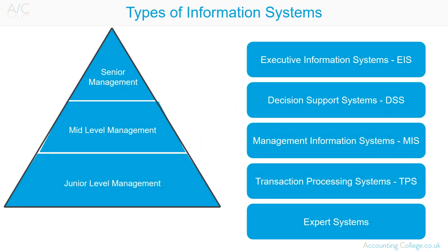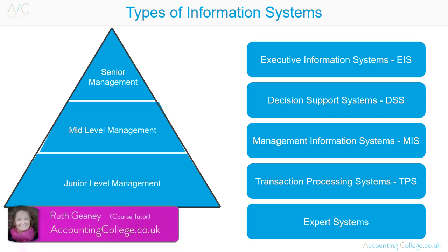Types of information systems. Information systems like transaction processing systems, management information systems, decision support systems, executive information systems, and expert systems are used to convert internal and external data into useful information for an organisation. They help make timely, effective decisions with regards to the planning and control of an organisation.